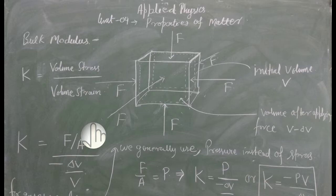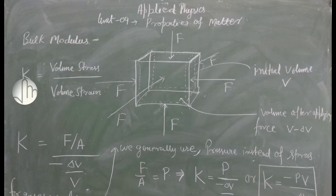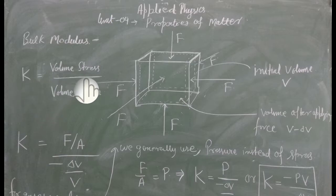Elastic modulus کا مطلب ہوتا ہے stress upon strain by definition۔ لیکن جب ہم bulk modulus کی بات کرتے ہیں تو bulk modulus کے لئے جو symbol ہم use کرتے ہیں وہ ہے capital K۔ تو capital K is equal to volume stress upon volume strain۔ Bulk modulus، volume stress اور volume strain سے related ہوتا ہے۔